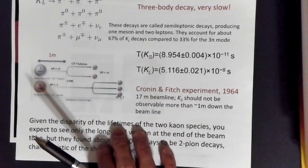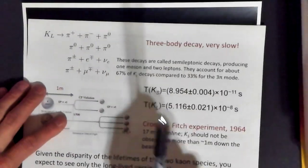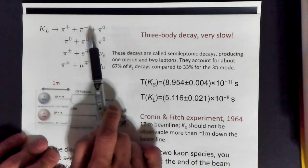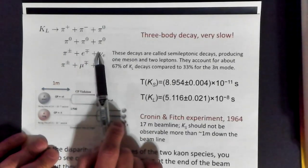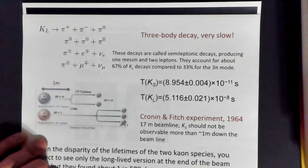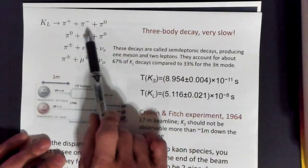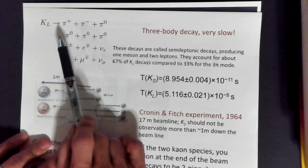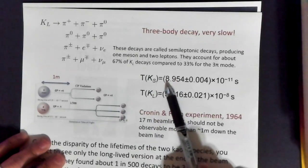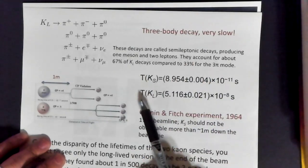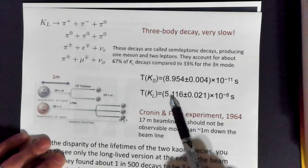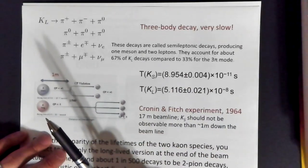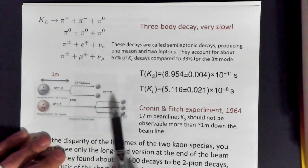Because the three-body decay is much more difficult, K-longs live for a much longer time — that's why they're called K-long. The lifetime of K-short is 8.95 × 10⁻¹¹ seconds, whereas the lifetime of K-long is 5.116 × 10⁻⁸ seconds. So the K-longs live about 500 times longer, as is observed experimentally.